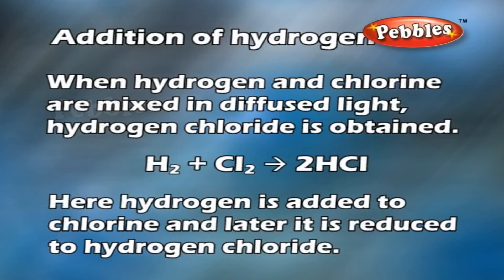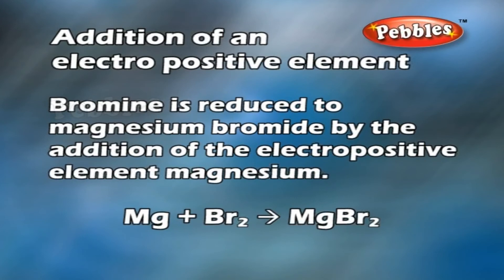Here, hydrogen is added to chlorine and it is reduced to hydrogen chloride. Addition of an electropositive element: bromine is reduced to magnesium bromide by the addition of the electropositive element magnesium.